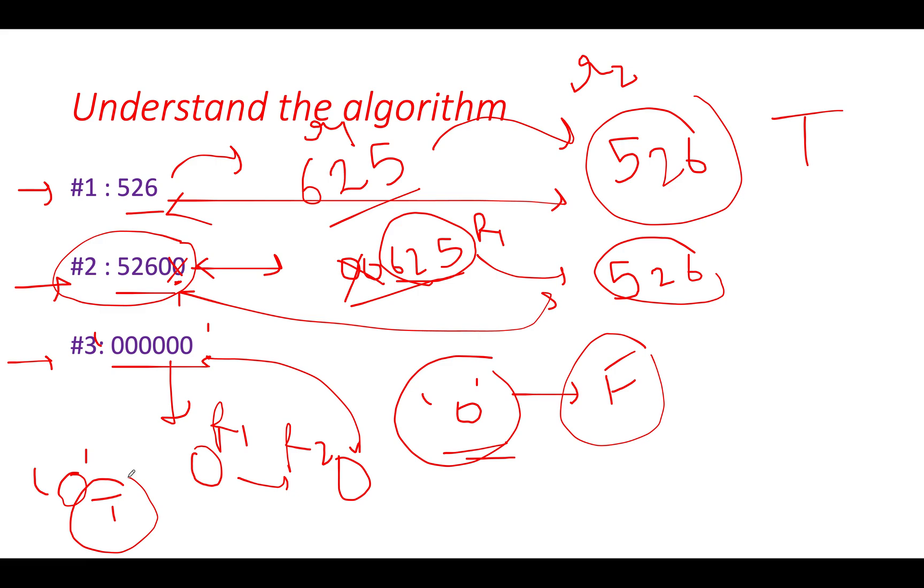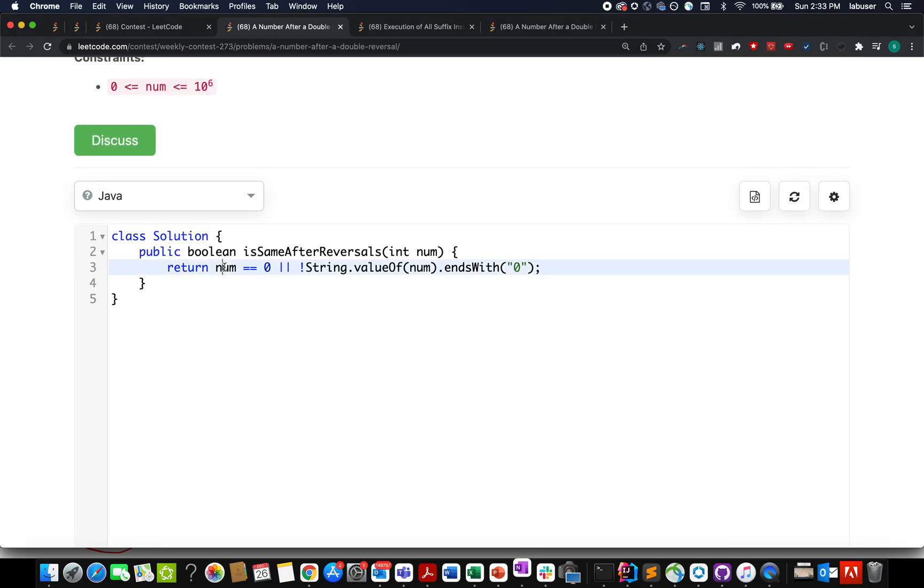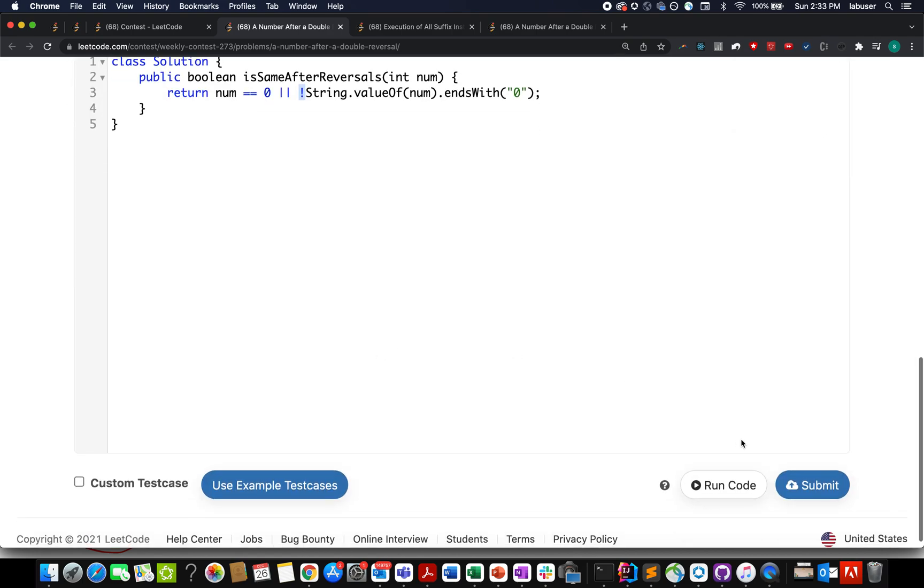And let's quickly move on to the coding part. It's a one-liner statement. We simply check if the number turns out to be equal to zero. In those cases, we have to return true. Otherwise, we need to check whether the number ends with zero or not. So we have casted that input number integer into string and we check whether it ends with zero. If it does end with zero, then we can say that the value will not remain the same as the input number after two reversal operations. And therefore, we have added a not here. So let's try this up.